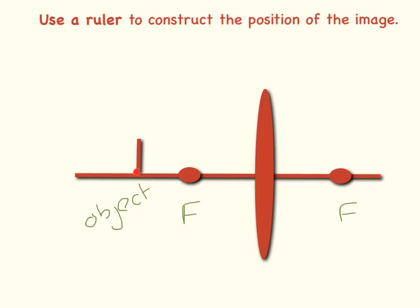Yet again, the bottom of my image is on the axis, so I don't need to worry about drawing those lines. I need to draw a line from the top of my object, through the middle of the lens. From the top of my object, parallel to the axis, across, and then refract it down through the principal focus.